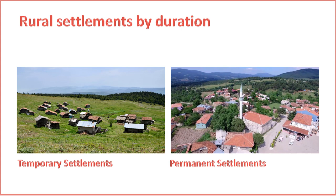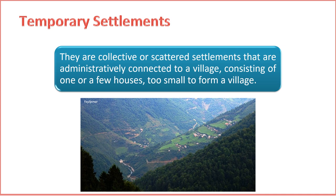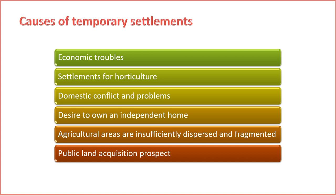8. Abandoned rural settlements. Settlements that were once inhabited but have been deserted over time — abandonment can result from environmental changes, economic decline, or shifts in population dynamics. 9. Cottage or clustered rural settlements. Cottage settlements consist of isolated dwellings or small clusters of houses, often with agricultural land attached, and may serve as weekend retreats or secondary residences. The duration of rural settlements is influenced by a combination of historical, environmental, economic, and cultural factors. Temporary settlements in Turkey can arise due to various factors, reflecting the dynamic nature of human activities and environmental conditions.